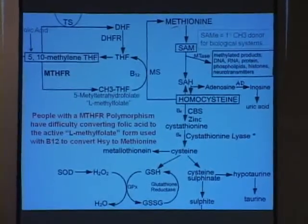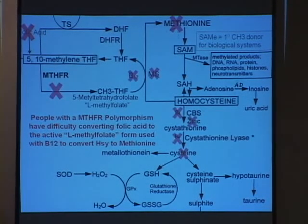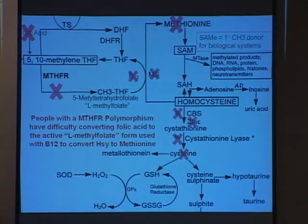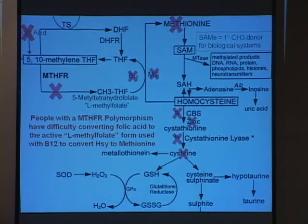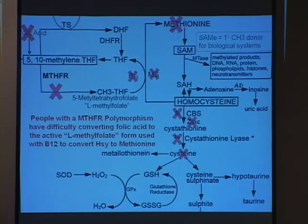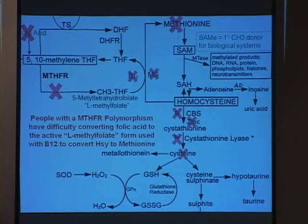People with an MTHFR polymorphism have difficulty converting folic acid to L-methylfolate and making these cycles work — that's the take-home. Interestingly, that's what we can affect via diet, which is why nutrition is so important. If I have an inborn error of metabolism and don't have the ability to make that last conversion to biologically active folate, I'm forever blocked — that's mom and dad's fault. So I have to think: how do I get around that? How do I do a workaround to provide the body with what it needs to methylate, to get the methylation cycle working? Fortunately, there are ways to do that through proper supplementation.